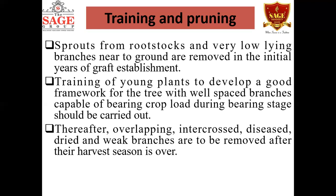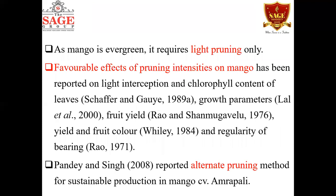Overlapping, intercrossed, dead, and weak branches should be removed after the harvest of fruits. As you know, mango is an evergreen tree that requires light pruning only. Heavy pruning is not advisable because fruits come on mature shoots only. Excessive pruning would waste the shoots that are going to produce floral flushes, inflorescences, and panicles.